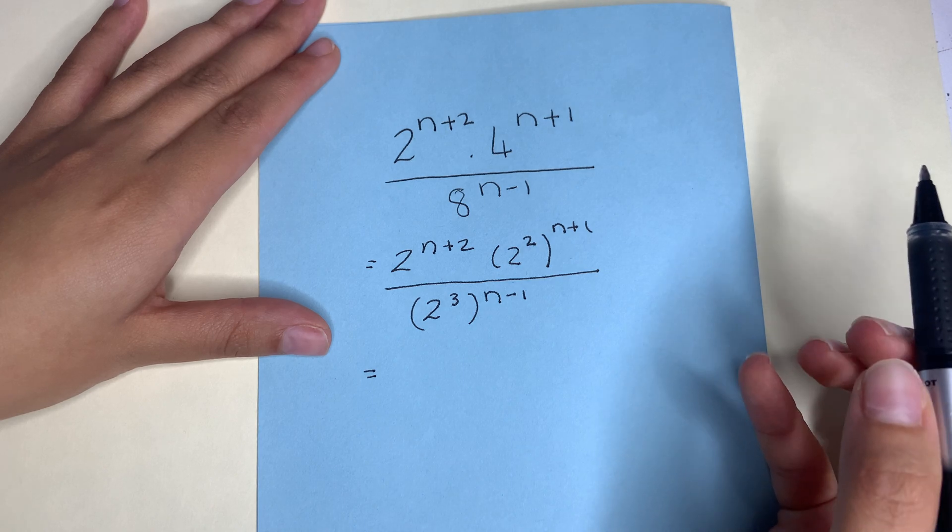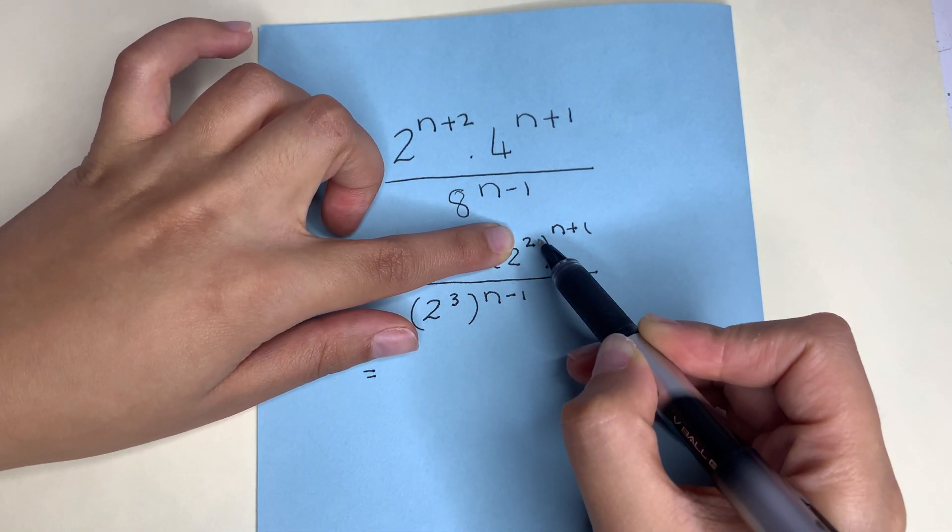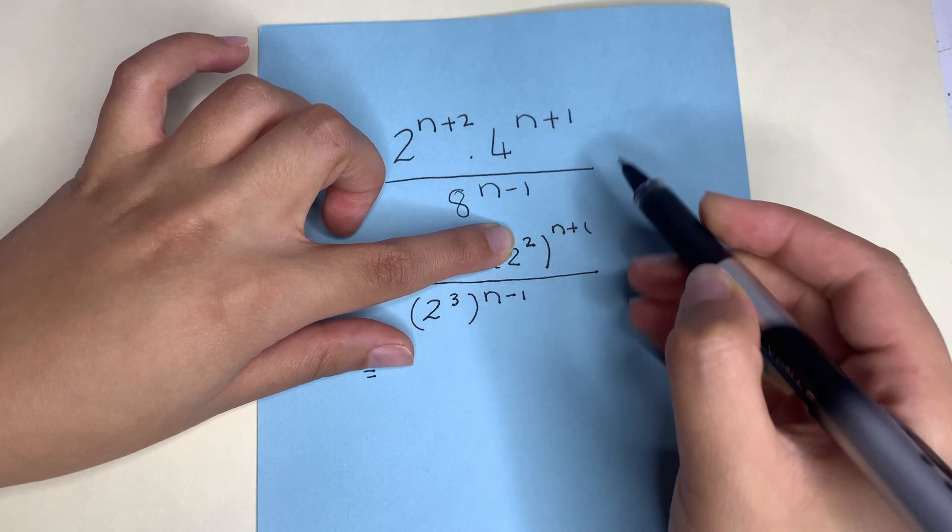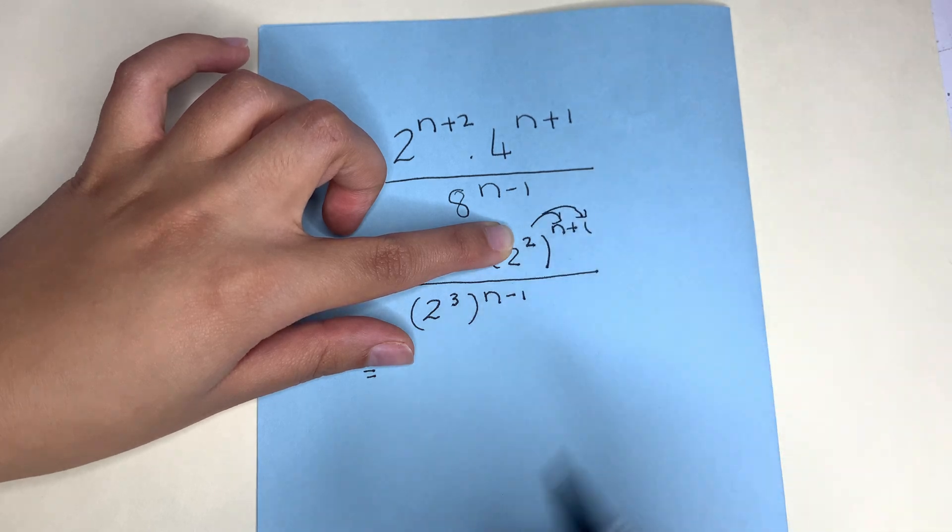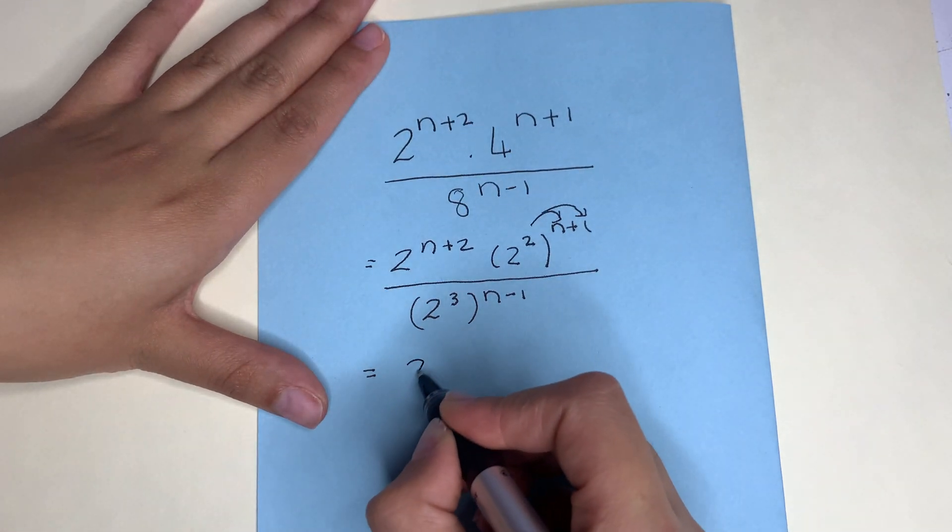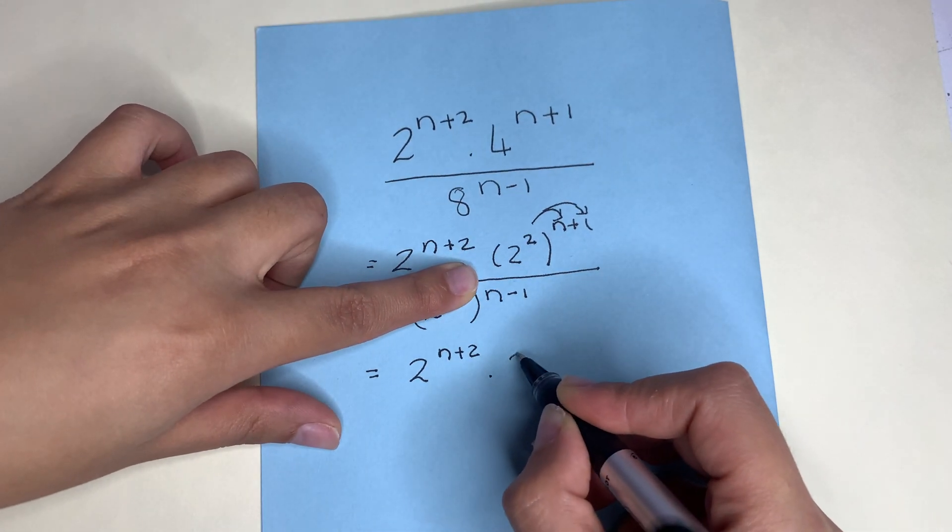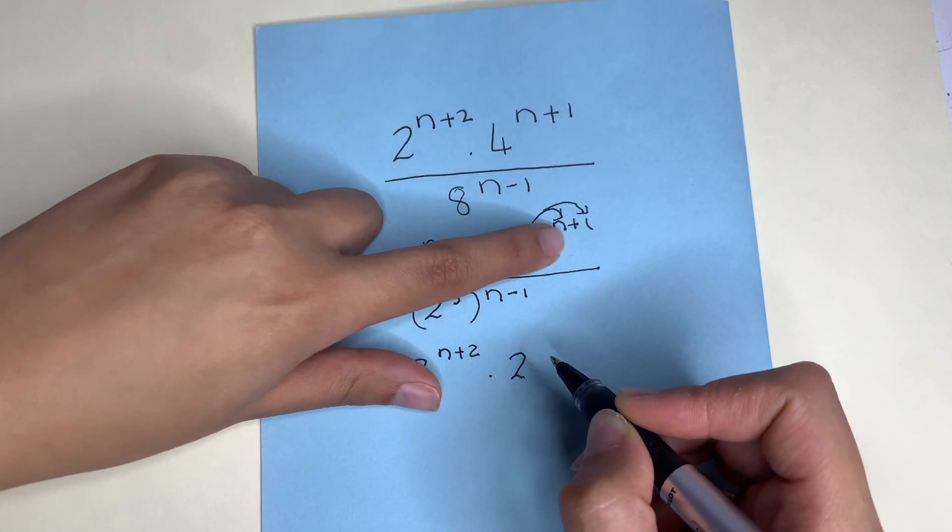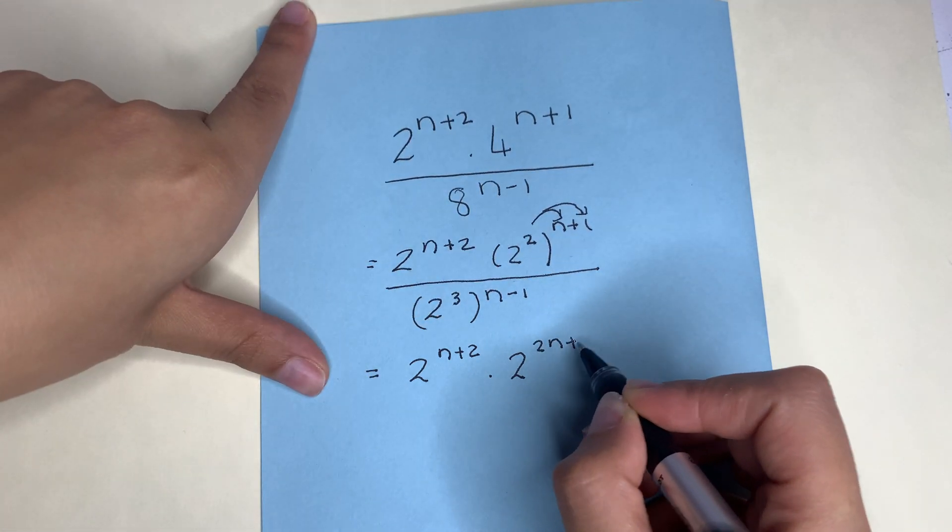Now we know according to the laws of exponents, if I've got an exponent on the inside of a bracket and then the exponent on the outside, we are going to do distribution of that exponent. So this is going to be 2 to the power of n plus 2. This is going to be 2 to the power of 2 times n which is 2n and then 2 times 1 which is 2.